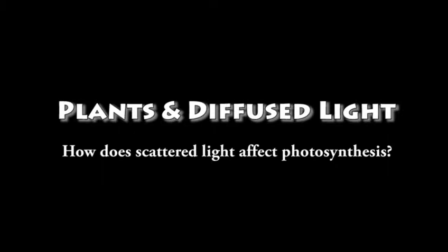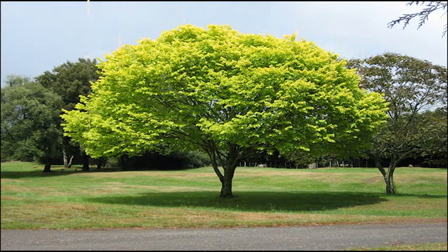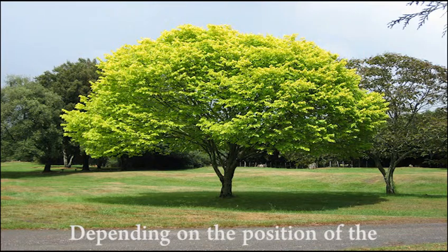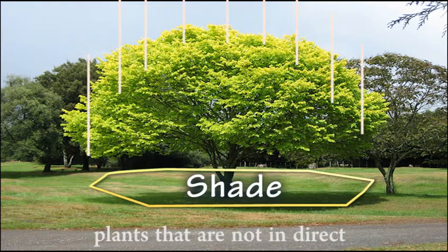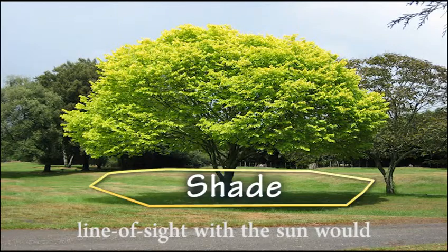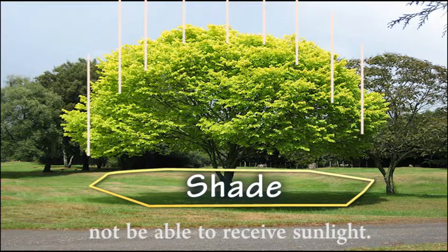Plants and diffused light. How does scattered light affect photosynthesis? Light travels in a straight line. Depending on the position of the sun at each time of the day, plants that are not in direct line of sight with the sun would not be able to receive sunlight.